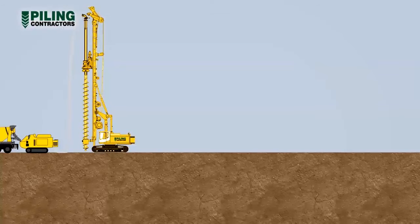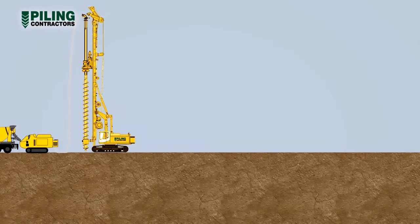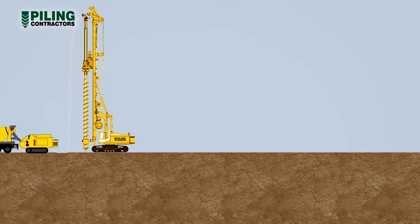Continuous flight auger piling is a fast and economical piling method, ideally suited to wet or granular ground conditions which otherwise would require the use of temporary casings to support the ground.